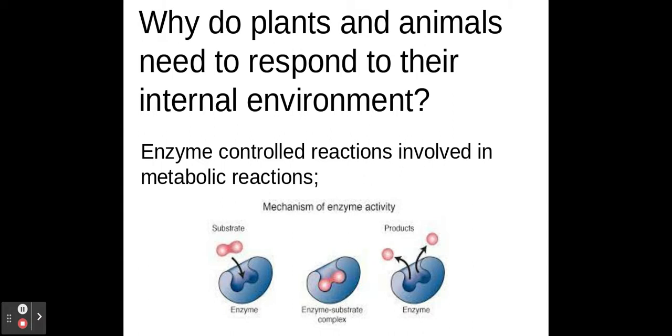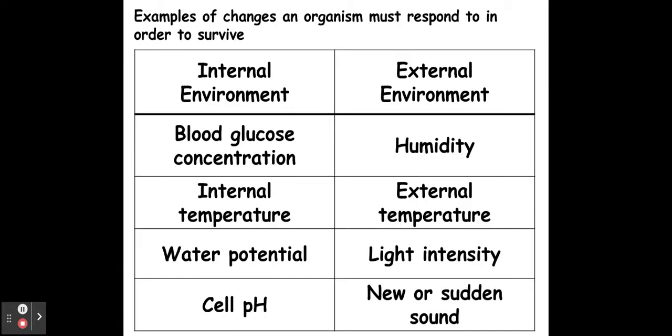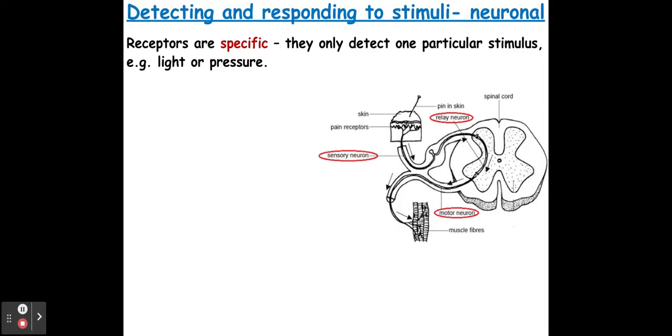Here are some other examples of different types of internal and external environments that need to be regulated. We're going to look a little bit more at the internal environment ones when we get on to homeostasis in the next video, but for now we need to look at how we detect and also respond to stimuli.